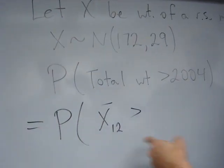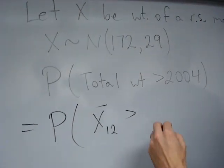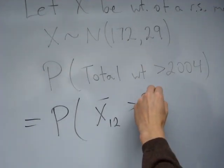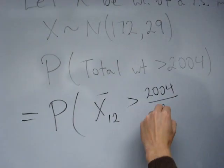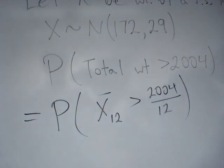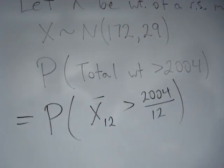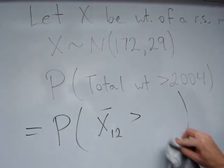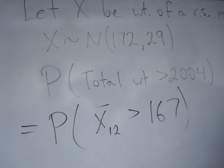And we want to find the probability that x-bar 12 is greater than 2,004 divided by 12, and 2,004 divided by 12 is 167. So I'm just going to write 167 here to save a little space.